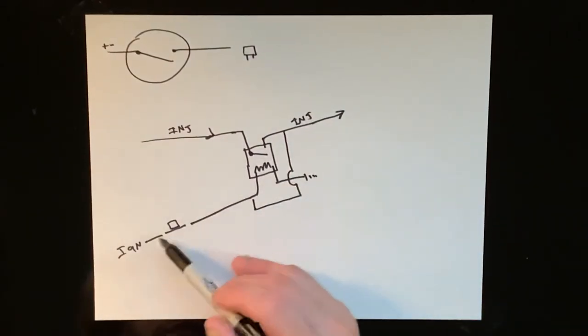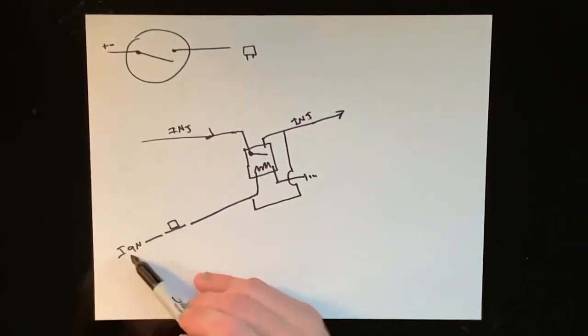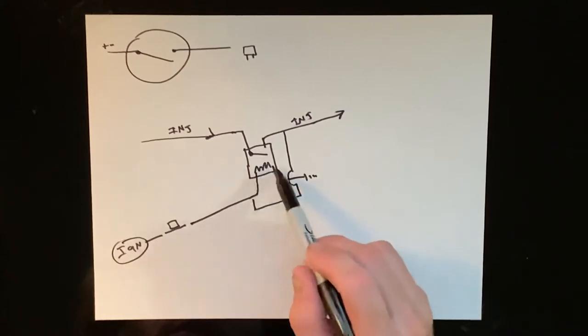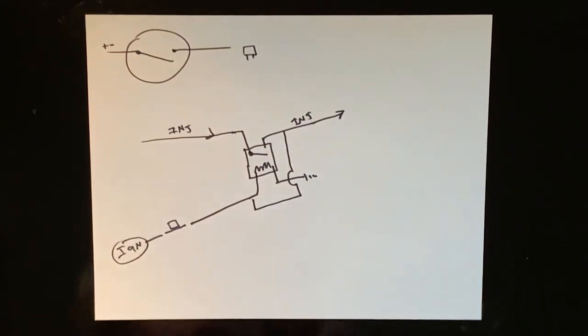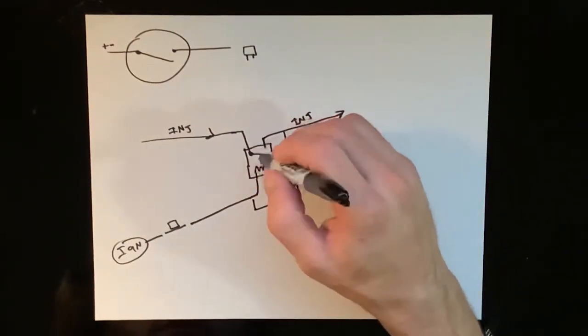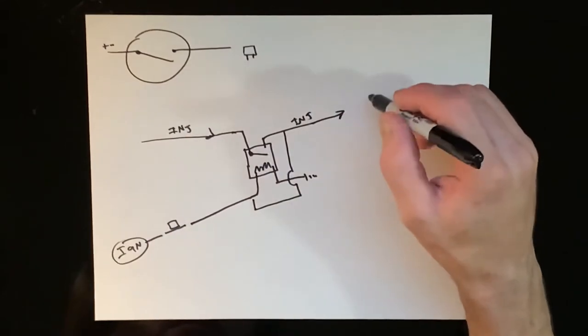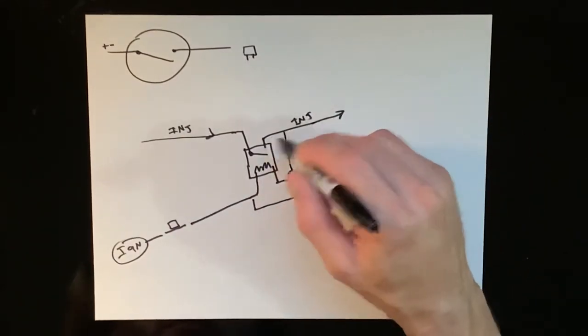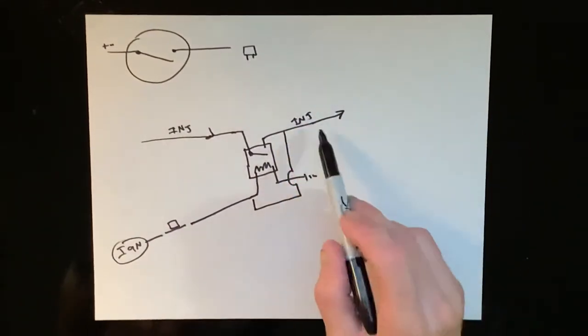So that in theory is a self-latching switch. Push this button while I have ignition power, it starts itself and feeds itself. Now on this vehicle, the application failed because for some reason, once the ECM got a capacitor battery going on here, it fed back 12 volts on this side of the line.